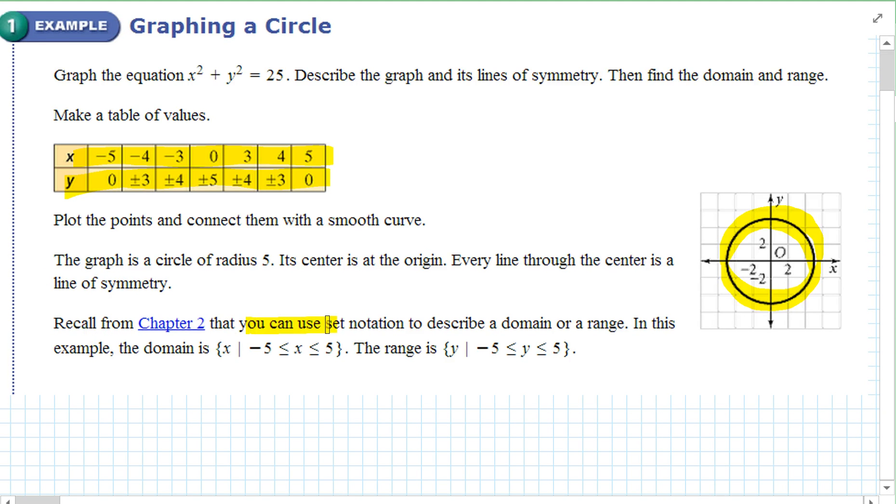Recall from chapter two that you can use set notation to describe the domain and range. In this example, the domain is x, all real numbers between negative five and five. And the range is all real numbers between negative five and five.